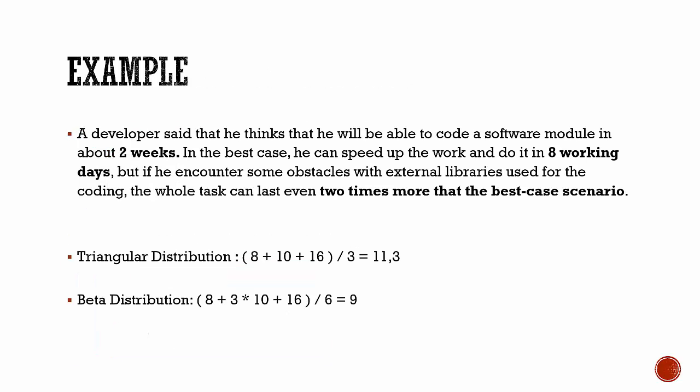Here is an example: A developer estimates he can code a software module in about two weeks. In the best case, he can complete the work in eight working days. But if he encounters obstacles with external libraries used for coding, the whole task can last even two times more than the best case scenario.